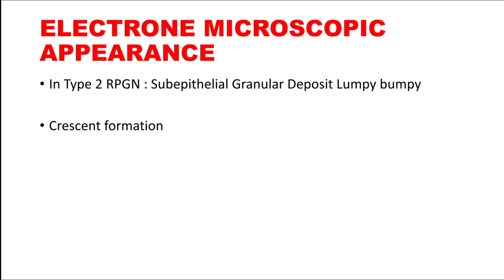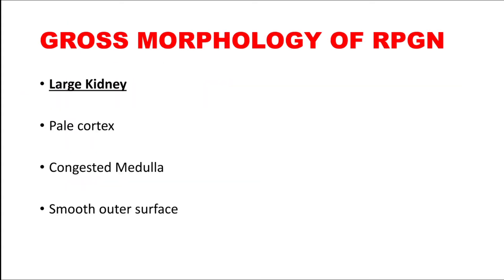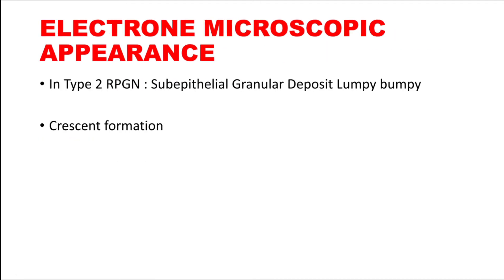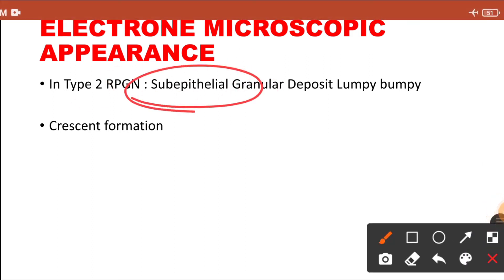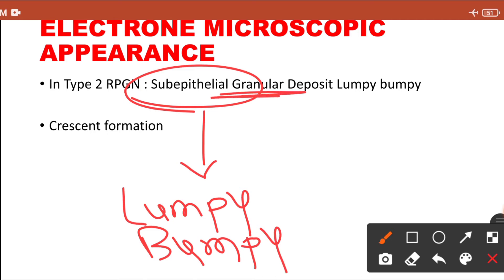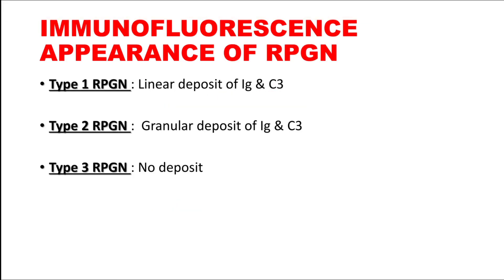In electron microscopy, the crescent will obviously be seen. If it is type 1 RPGN, then deposits are not seen. But if it is immune complex induced RPGN, then in electron microscopy you will see subepithelial lumpy-bumpy deposits of immunoglobulin and complement. As discussed in the previous lecture, in immune complex mediated glomerulonephritis the deposit is subepithelial and granular — lumpy-bumpy.